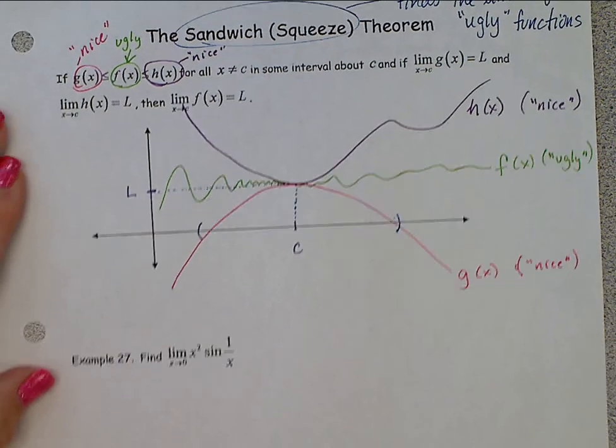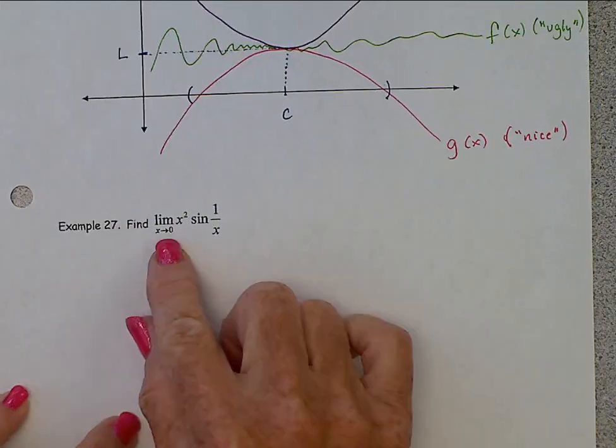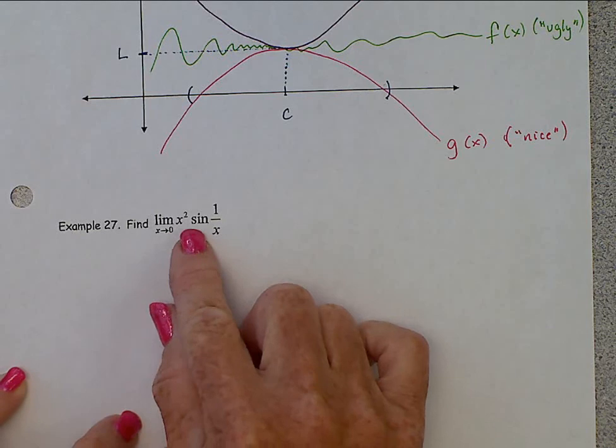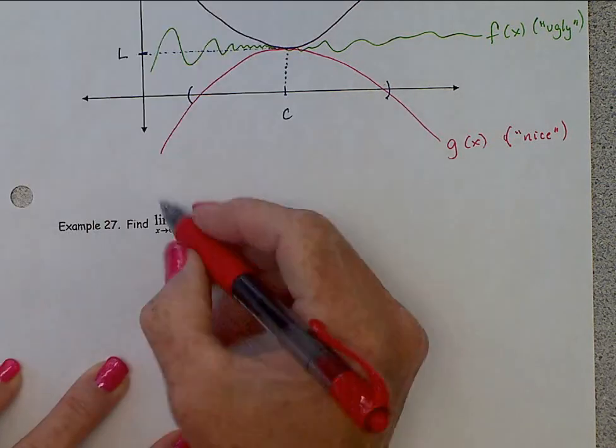Let's take a look at an example. We want to find the limit as x approaches zero of x squared sine one over x. And this in here is our ugly function.